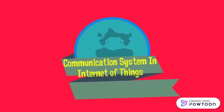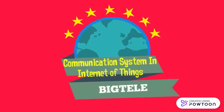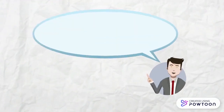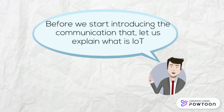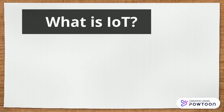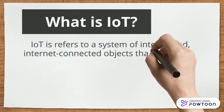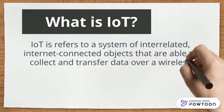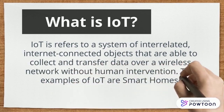Hi, we are from GoodFitDaily. Our title for day one research is Communication System in Internet of Things. Before we start introducing the communication data, there are examples of IoT. IoT refers to a system of interrelated, interconnected objects that are able to collect and transfer data over a wireless network without human intervention. Examples of IoT are smart home, connected car, and RCT.